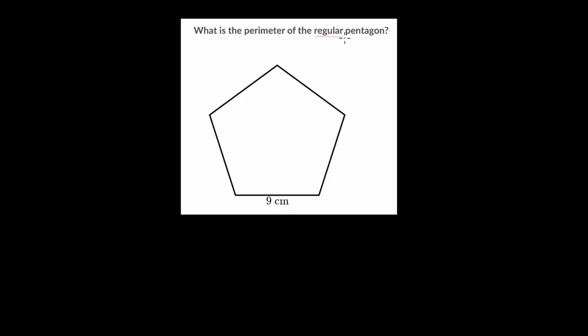To answer this question, we need to understand what the word regular means. When you have a regular polygon, this just means equal sides and equal angles. In this case, the angles aren't necessarily important. A regular pentagon will have all equal sides, so all of these will be 9 centimeters.